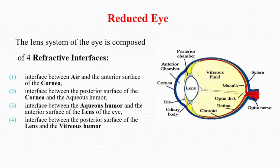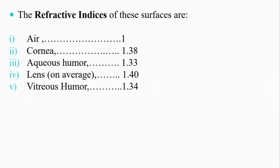Each refractive interface has its own refractive index. Air has a refractive index of 1, the cornea has a refractive index of 1.38, the aqueous humor has a refractive index of 1.33, and so on for the other surfaces.